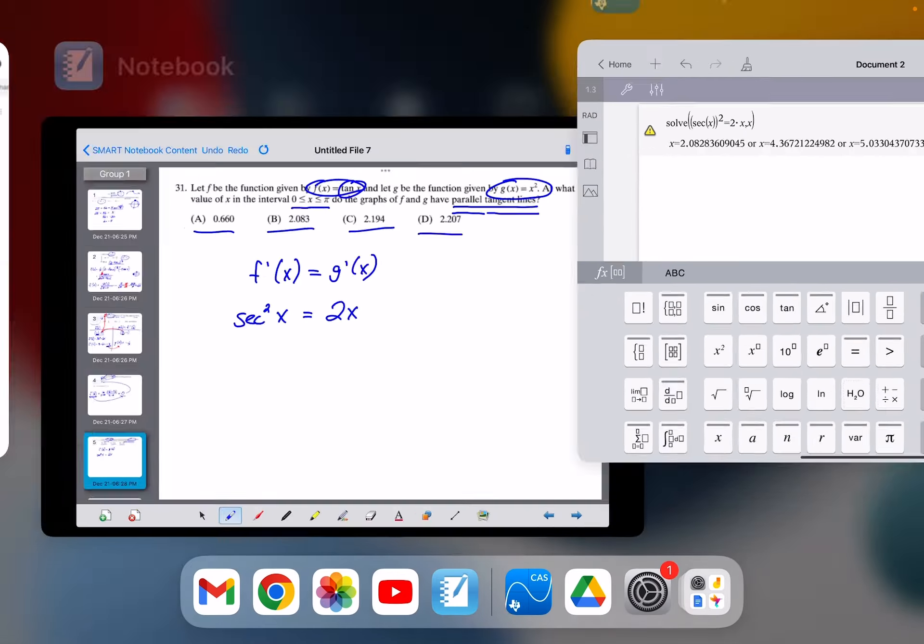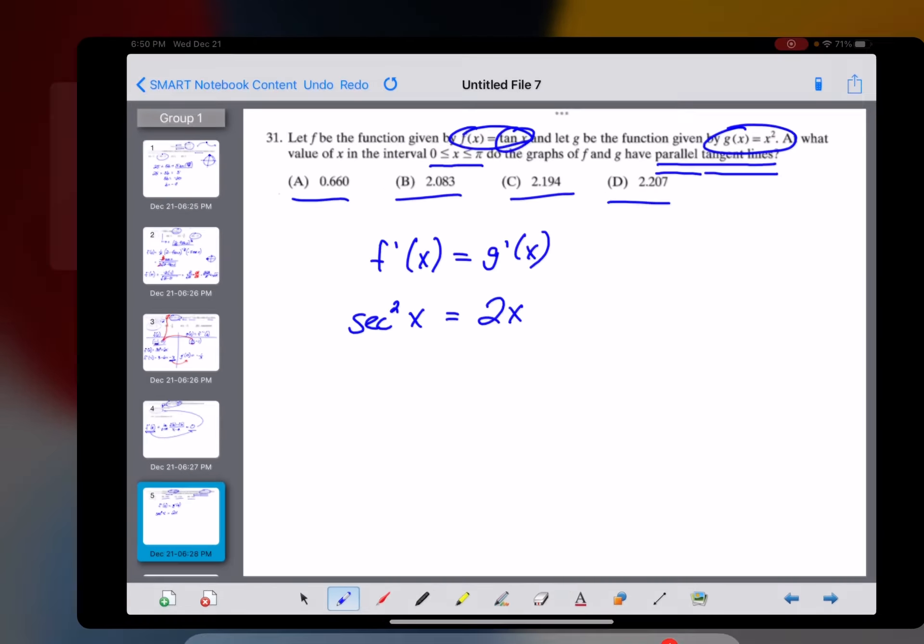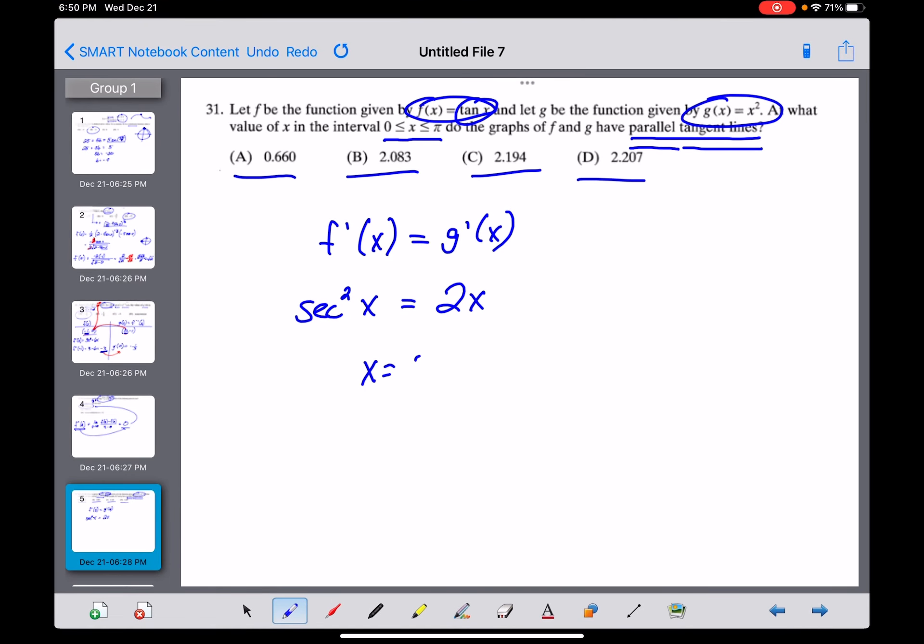If we were to round that, I'll go ahead and write that out. x is equal to 2.083, which is one of our answers for 31. So it looks like we're dealing with B right there.